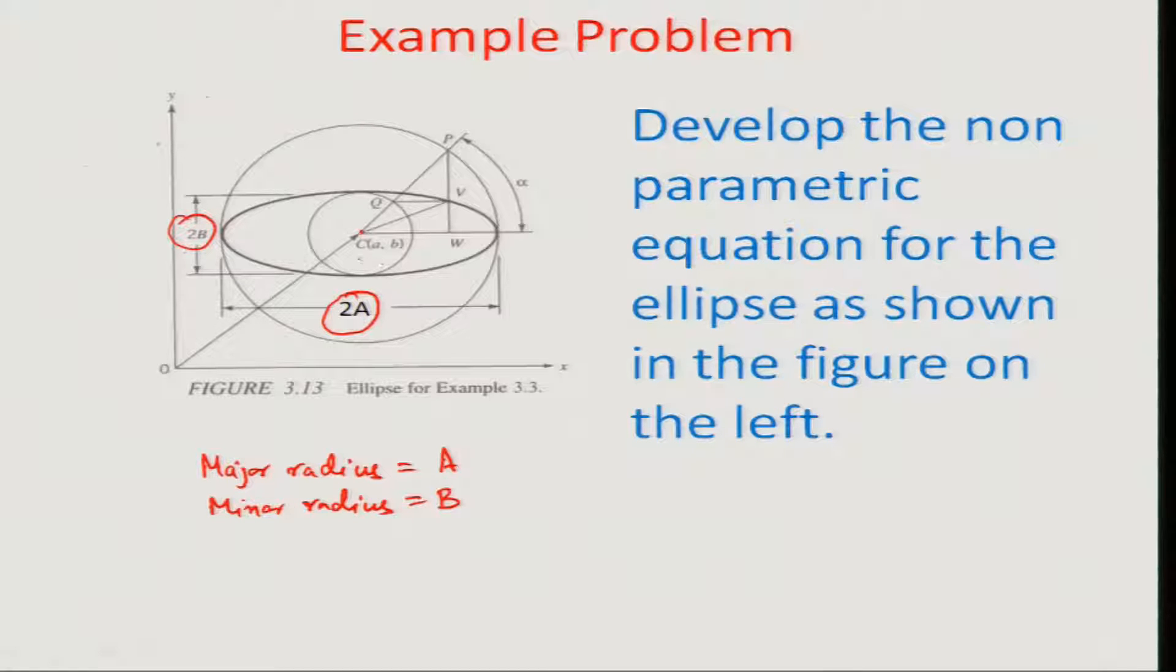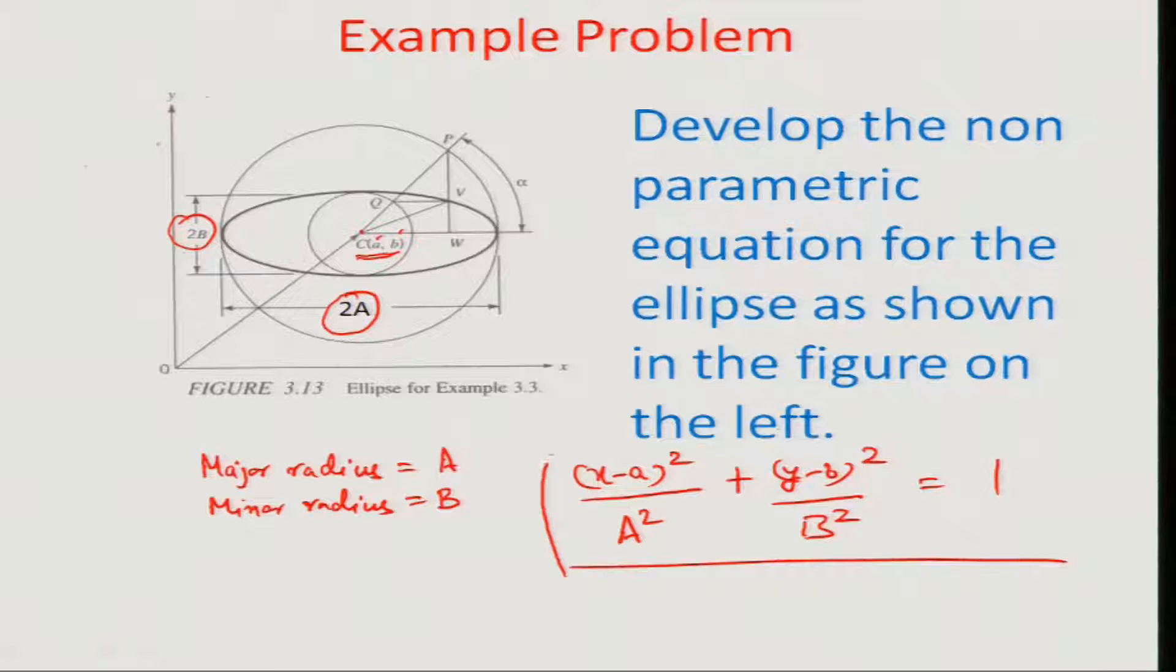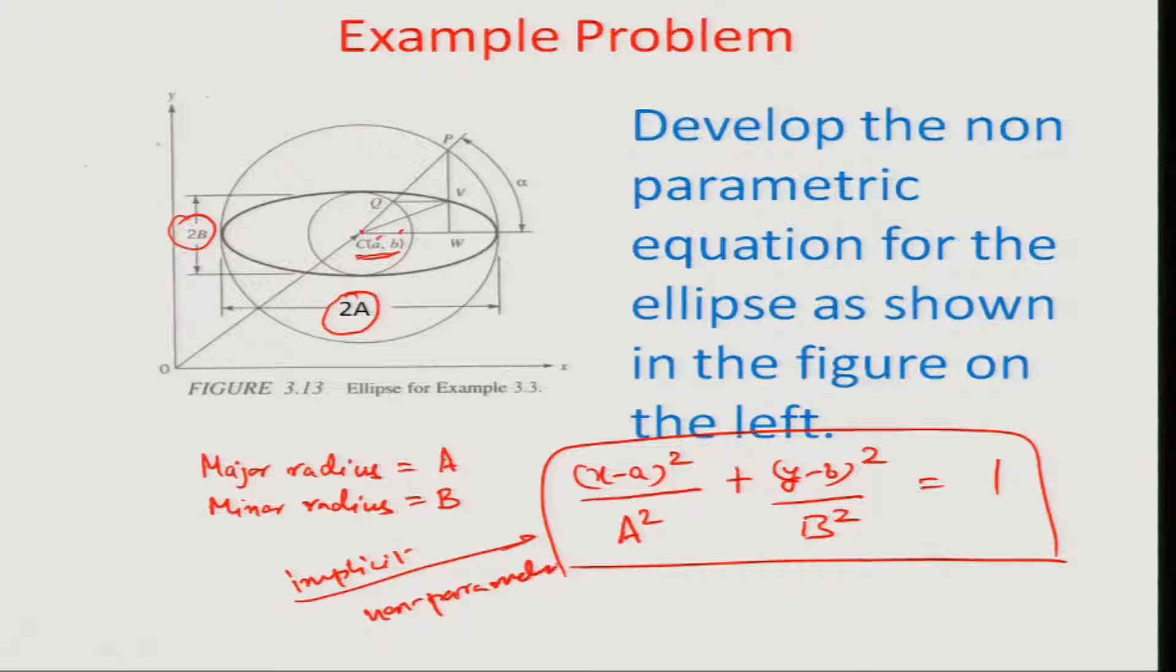Also important is this point C which is actually the geometric center of the particular ellipse where there are location coordinates small a and small b representing the C. As you may reckon from first level coordinate geometry, the equation for such an ellipse would be x minus small a square by square of the major radius plus y minus small b square by square of the minor radius equal to 1.